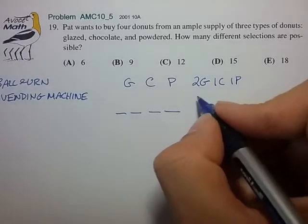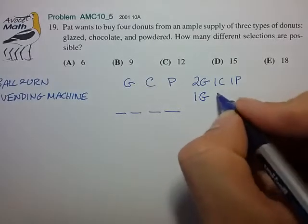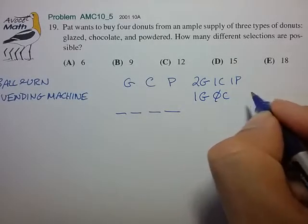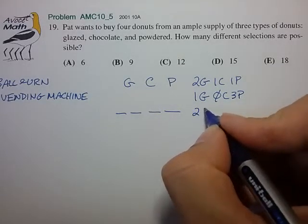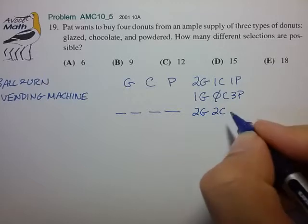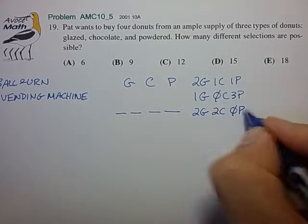Another selection might be one glazed, zero chocolate, three powdered. Or perhaps another selection might be two glazed, two chocolate, zero powdered.